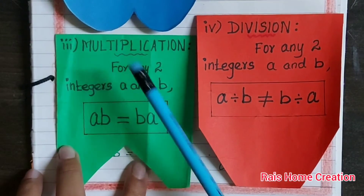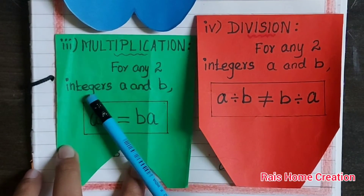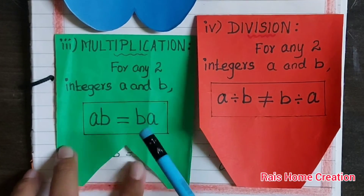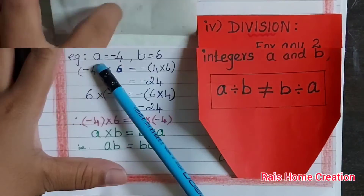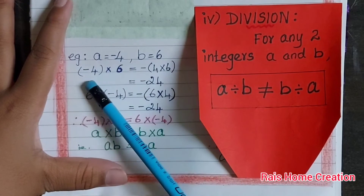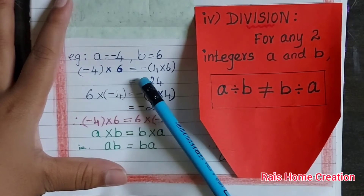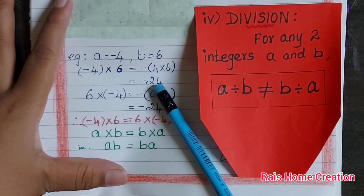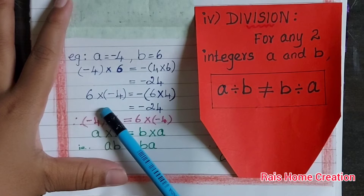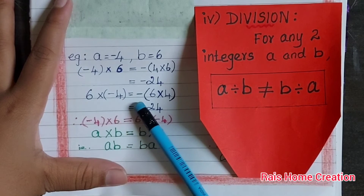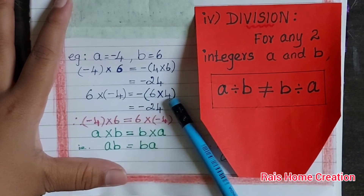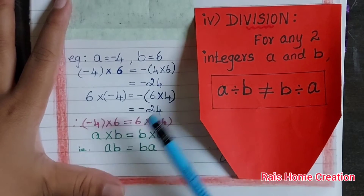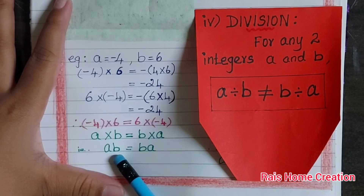Third, multiplication. For any two integers A and B, A into B equal to B into A. Example: A equal to minus 4, B equal to 6. Minus 4 into 6 equal to minus of 4 into 6 equal to minus 24. Both the answers are the same. Hence, the condition is equal.